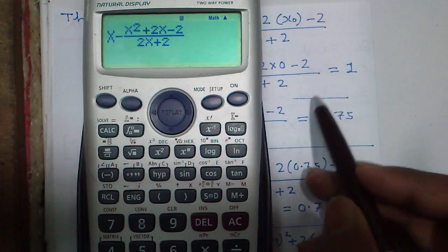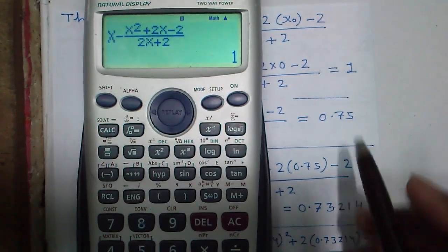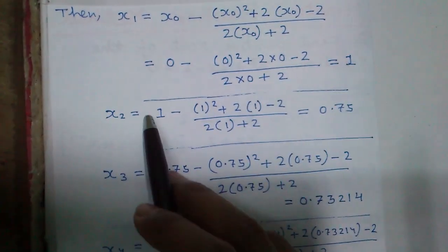Now we will use x_0 equals 0, our initial value. So press calc and x equals 0. It gives you 1.